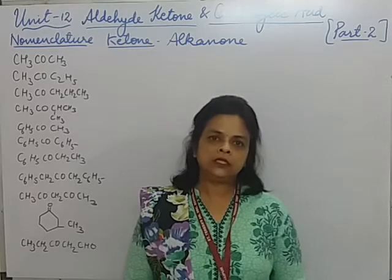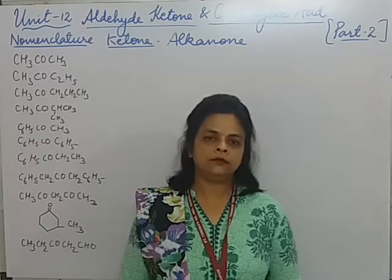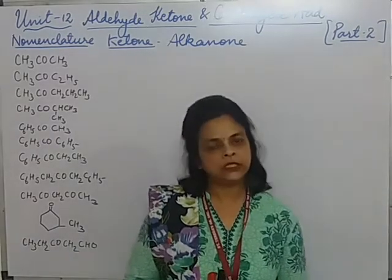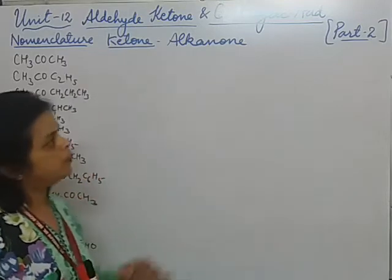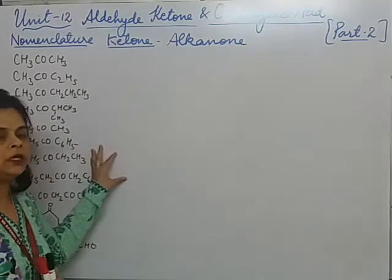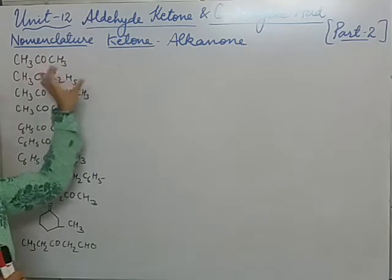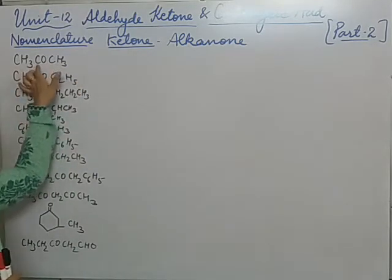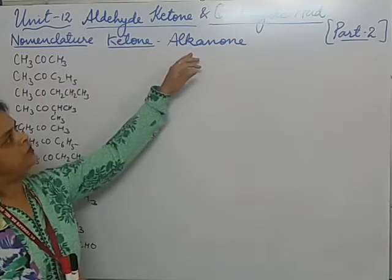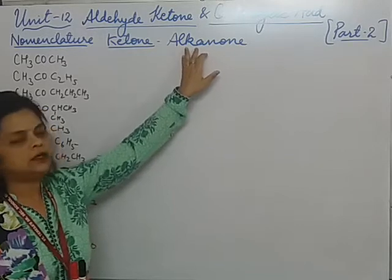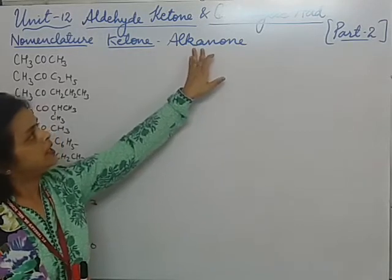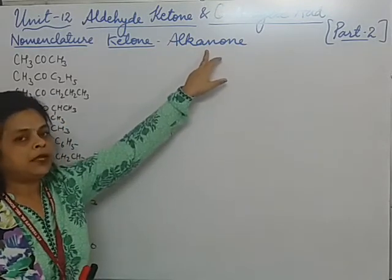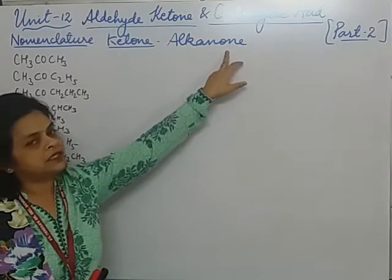As we know that for ethers when we were writing the common names, we were writing the two alkyl groups in alphabetical order followed by the word 'ether'. Here in the ketones also, when we write the common name, we will write the two alkyl parts in alphabetical order and this carbonyl group will be termed as 'ketone'. For the IUPAC name we will follow ALK-AN-ONE, where ALK stands for number of carbons, AN is the primary suffix, and ONE is the secondary suffix.